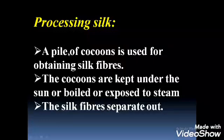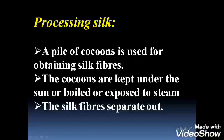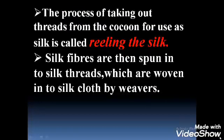A pile — or group — of cocoons is used for obtaining silk fiber. The cocoons are kept under the sun, or boiled, or exposed to steam. Then the silk fibers are separated out.